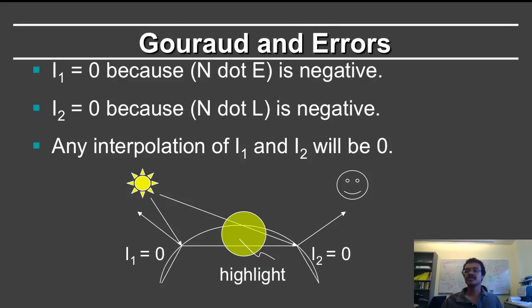Errors, we've already talked about those in the previous segment. So here is an extreme case where i1 and i2 are 0 because either the light is pointing backwards or the eye does not see the point. And now you have 0s in both cases and you want to interpolate to make a highlight. Of course, that's not going to happen. If you have 0 at the two vertices, the interpolation is also 0. And so Gouraud can have problems.